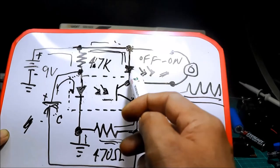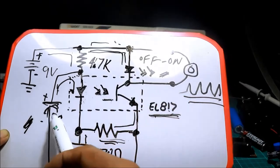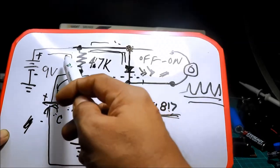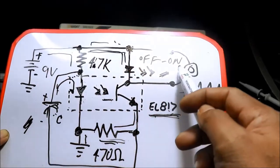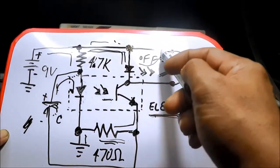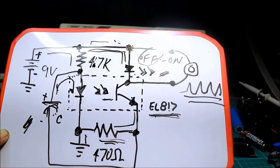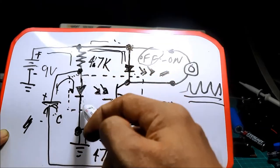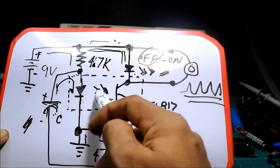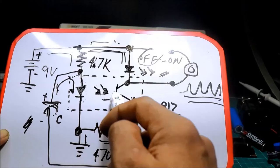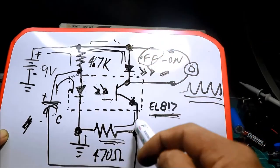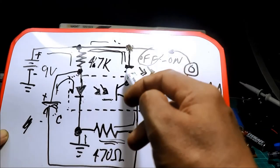Nag-flasher siya. Dahil sa charging ng kapasitor at discharging. Charge. Pag nag-charge, off. Papunta sa ground. Discharge. Pag-switch on ang photodiode sa loob ng EL817. Pop-forward bias ang transistor. Makakadalaw na yung kuryente sa LED papunta sa ground. O-on yung LED.